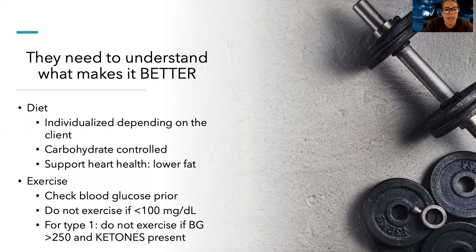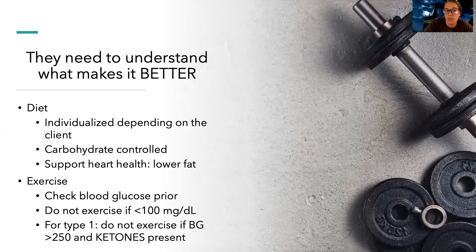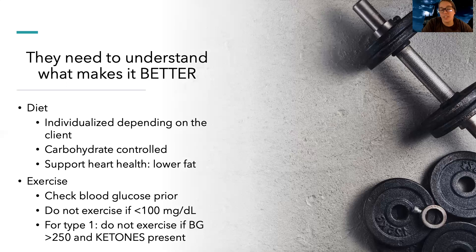What we teach the patient about their diet is going to be individualized. We usually do what's called a carbohydrate-controlled diet, managing how many carbohydrates the patient is taking in. We also want to support heart health because diabetes and cardiovascular health are really closely connected. So on top of a carbohydrate-controlled diet, I want to watch the amount of fat they're intaking, because this patient is at much higher risk for cardiovascular complications. I really want to treat not just the diabetes, but the complications too.